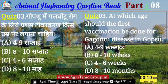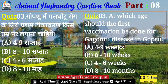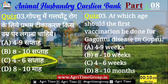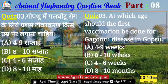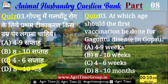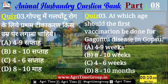Quiz 3 का जिन्होंने C answer comment किया है — यानि कि 4-6 सप्ताह — उन सभी का answer right है। गौपशु में गलघोटू रोग के लिए प्रथम टीकाकरण हम 4-6 सप्ताह में देते हैं। चलिए बढ़ते हैं अगले question की ओर।